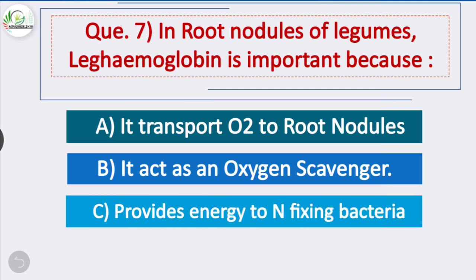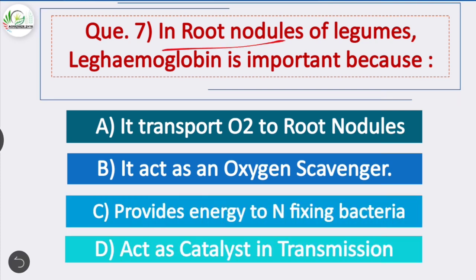Question 7: In root nodules of legumes, leghemoglobin is important because — option B is correct — it acts as an oxygen scavenger. It combines with oxygen and creates anaerobic conditions in nodules for fixation of nitrogen. Nitrogen fixation is done with the help of the enzyme nitrogenase, which functions under anaerobic conditions, maintained by leghemoglobin.